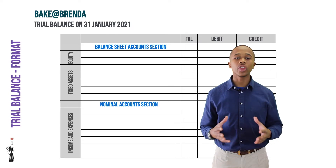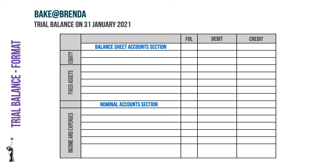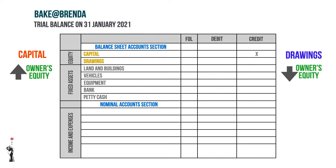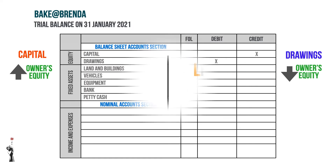We first start with the balance sheet section and then the nominal account section, exactly as we've done on the general ledger. The balance sheet section consists of equity and asset accounts. Capital and drawings are part of your equity accounts. Capital increases your owner's equity and will be balanced on the credit side, while drawings decreases your owner's equity and will be balanced on the debit side — as you can see, the DALEK acronym is still very important.